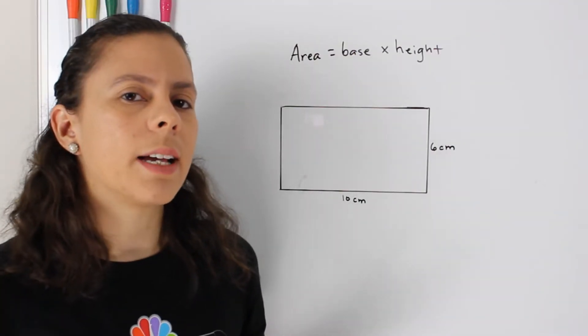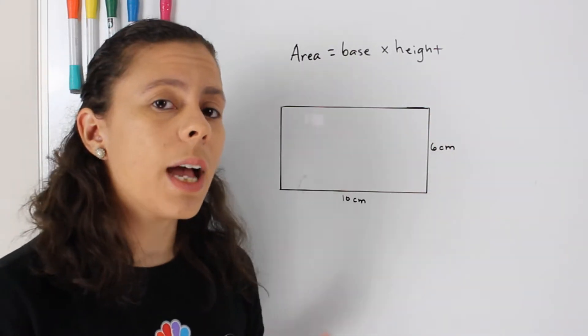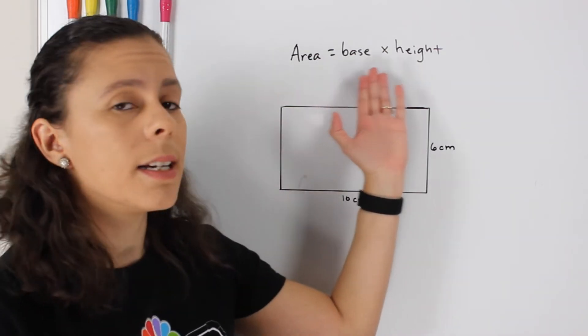Let's suppose that we have a rectangle that is 10 centimeters by 6 centimeters. We know that the formula for the area of a rectangle is just base multiplied by the height.